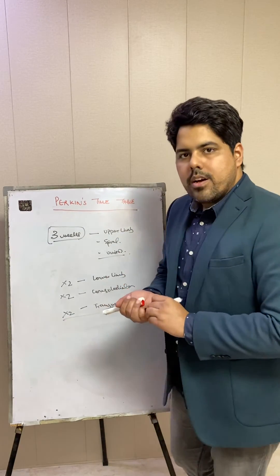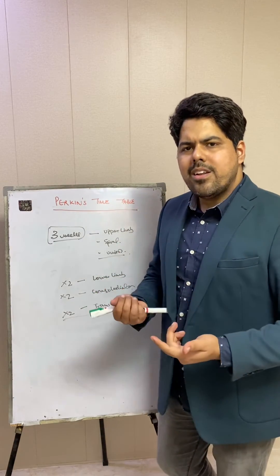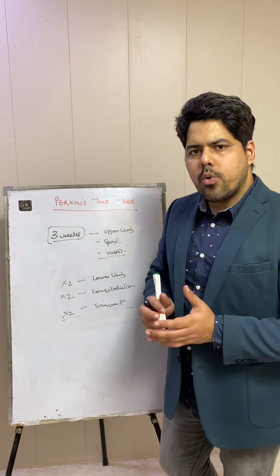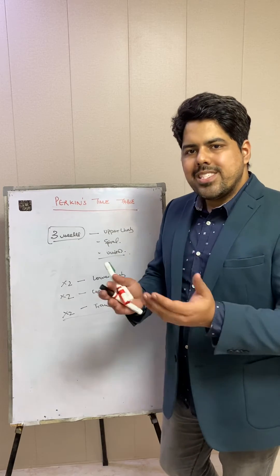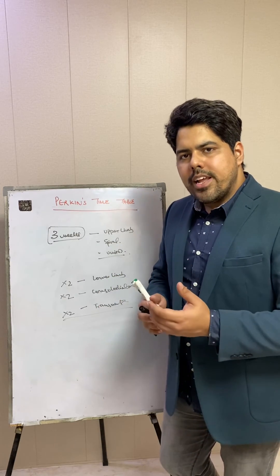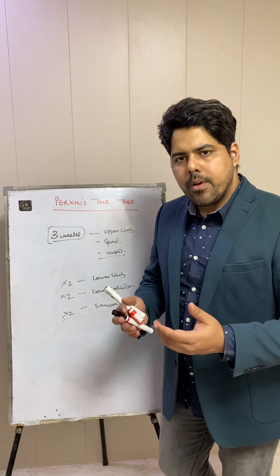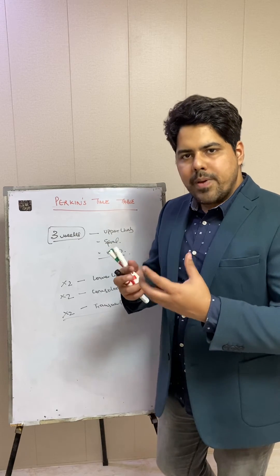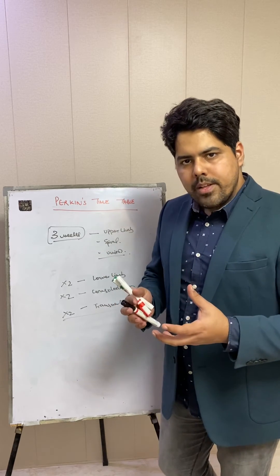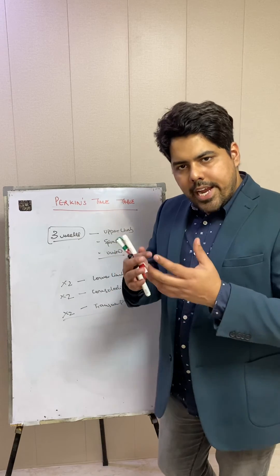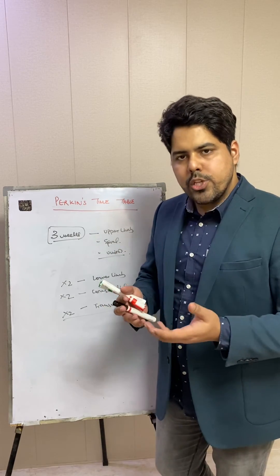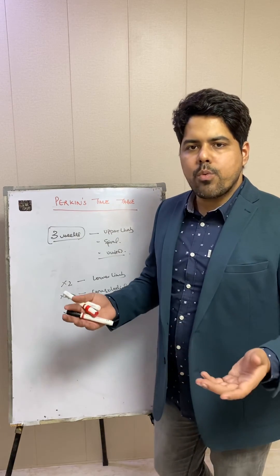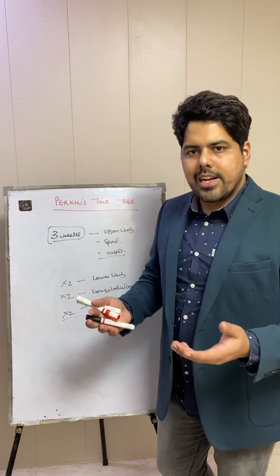So ideally, an upper limb spiral fracture takes 3 weeks for clinical union, but the same fracture in the lower limb is 3 × 2 = 6 weeks. If we are dealing with a transverse fracture of the lower limb and talking about consolidation, it becomes: 3 (base) × 2 (lower limb) = 6 weeks, × 2 (transverse) = 12 weeks, × 2 (consolidation) = 24 weeks — which is 6 months.